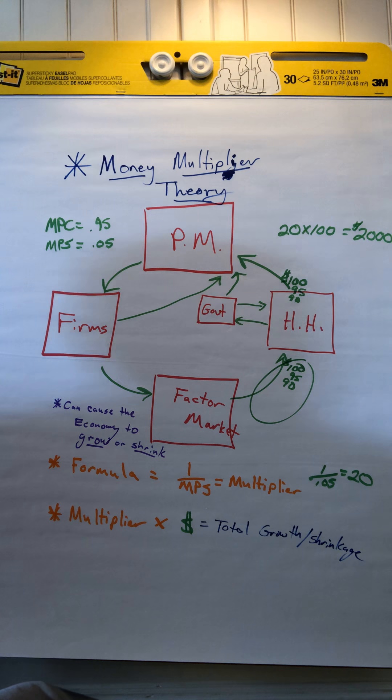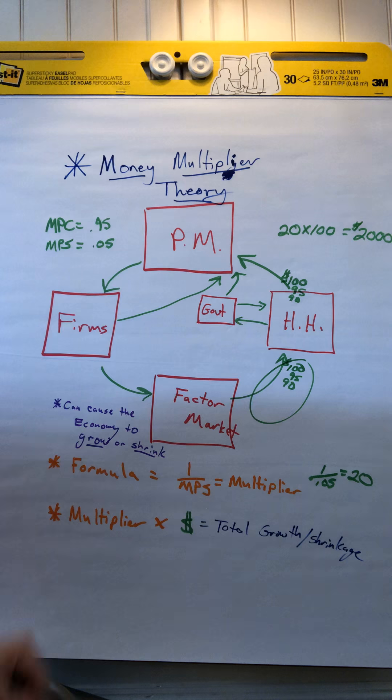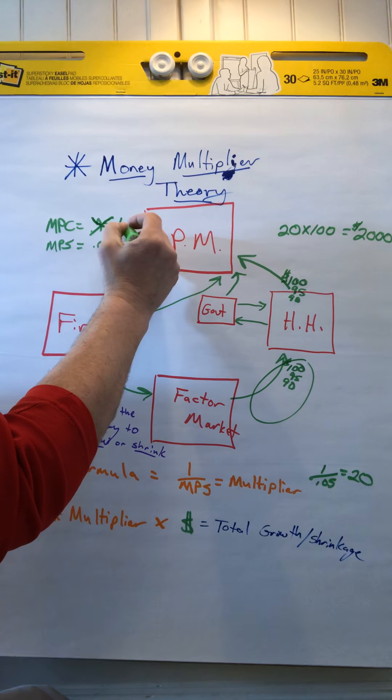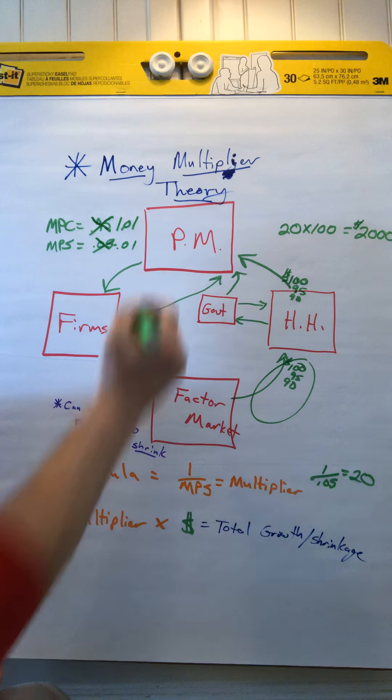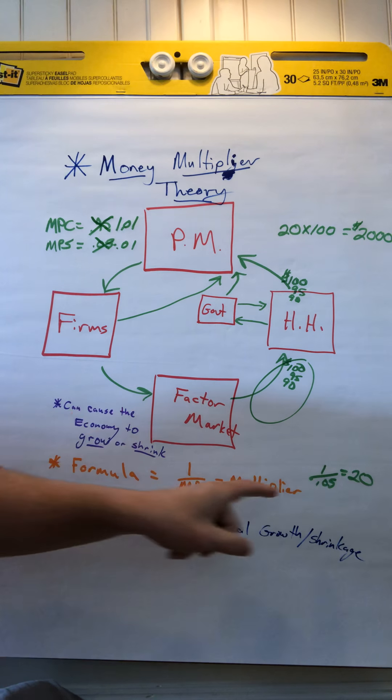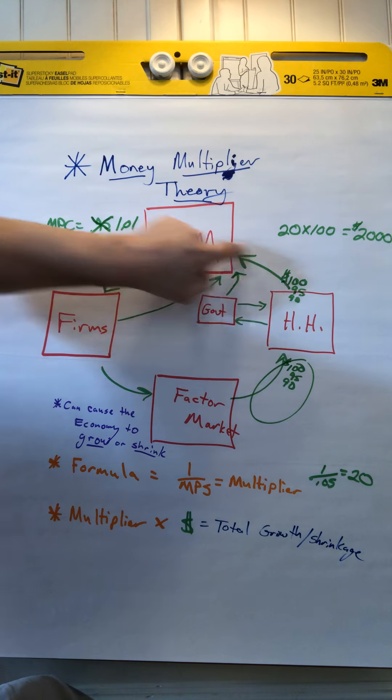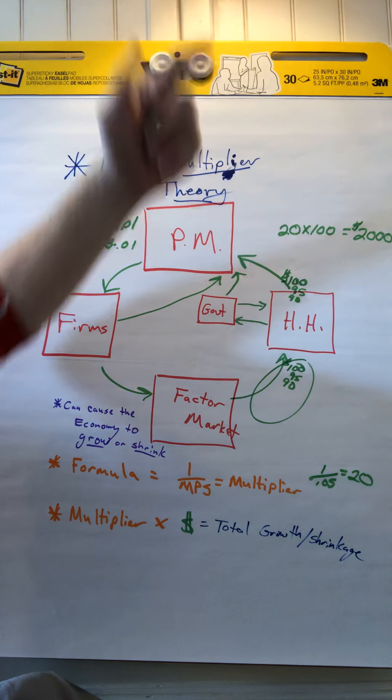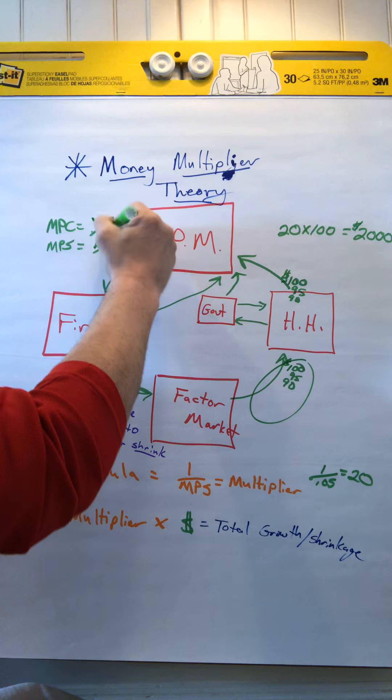Now the MPC and MPS don't always stay at 0.95 and 0.05. Back before the recession, back in the early 2000s, our MPC was 1.01. We were spending a dollar and a penny for every dollar we made. So this was negative 0.01. So what that meant is if you divide negative 0.01 into one, it's infinity. As fast as money goes around, that money would come back and be spent. Money would go around and be spent. And basically as fast as money could go throughout the economy, our economy would grow. Now that's not typical.